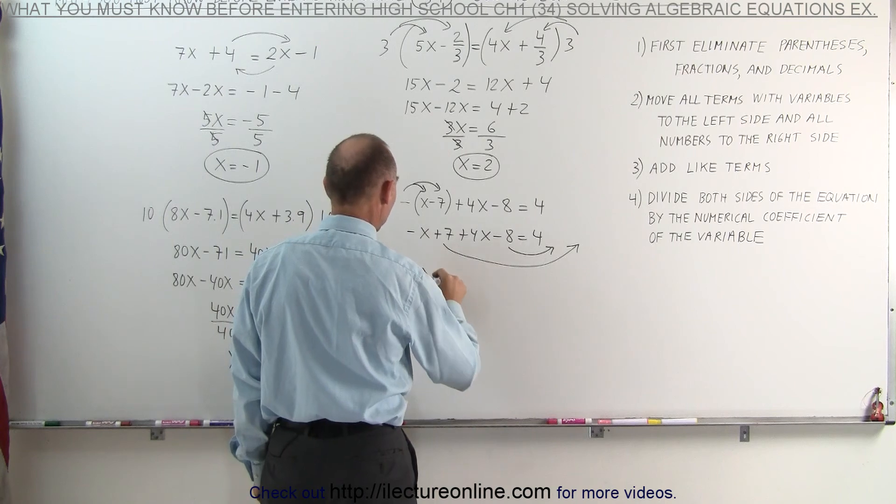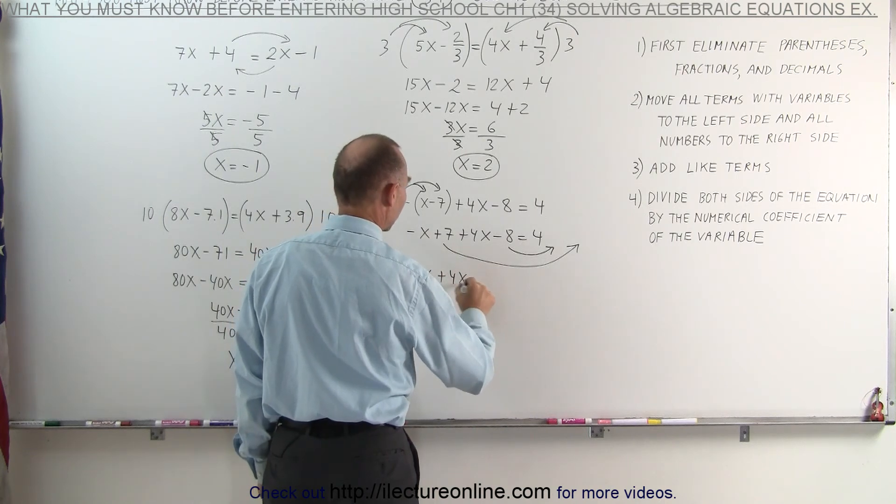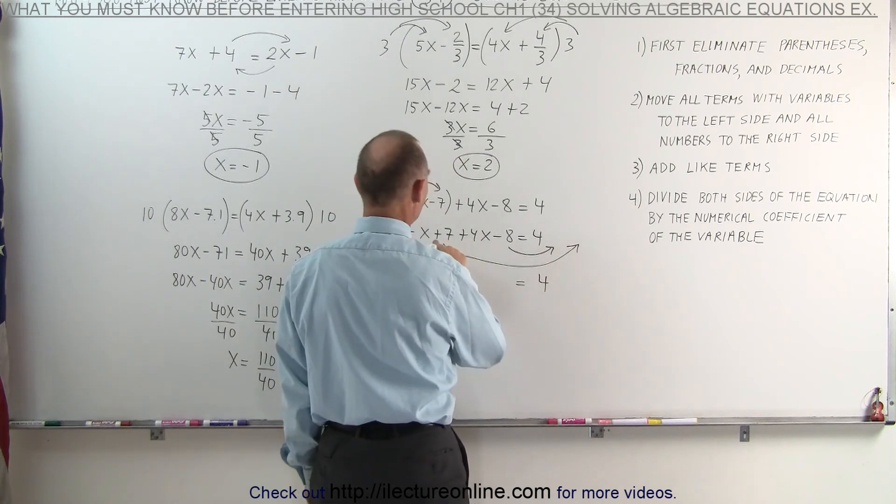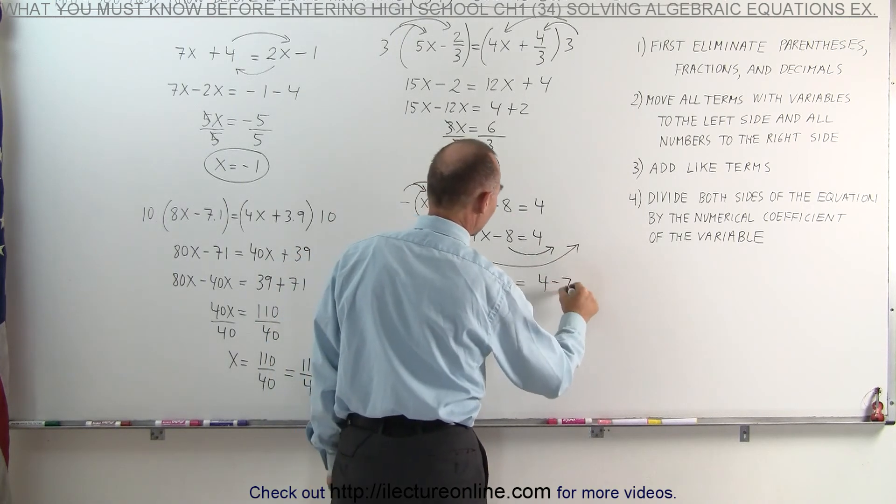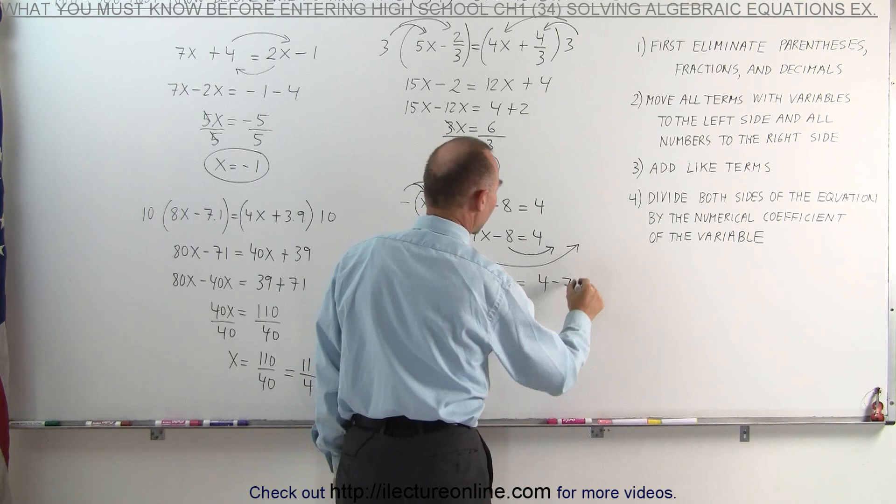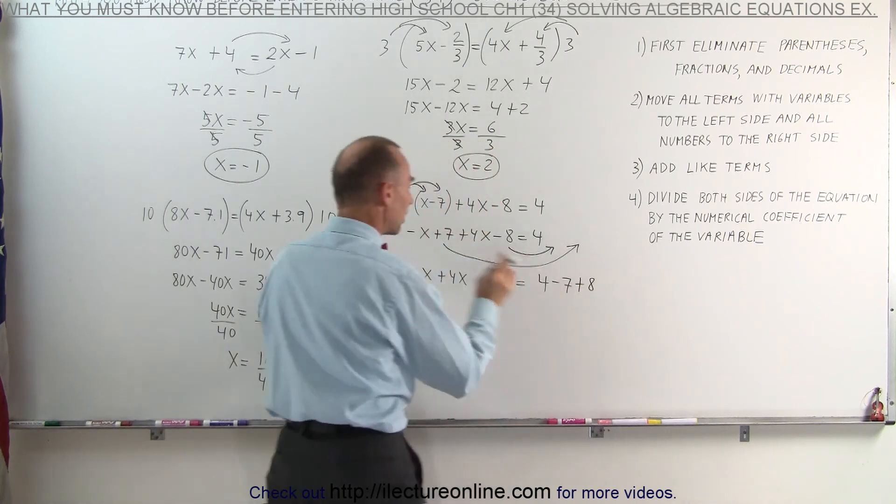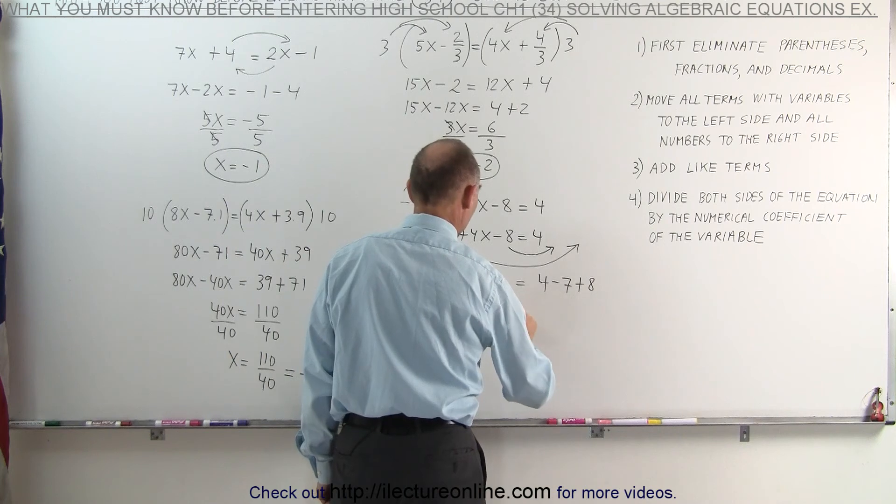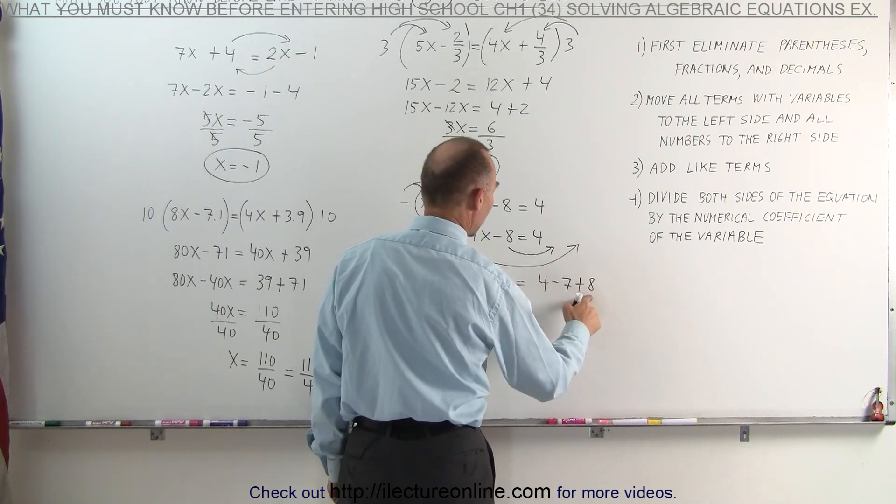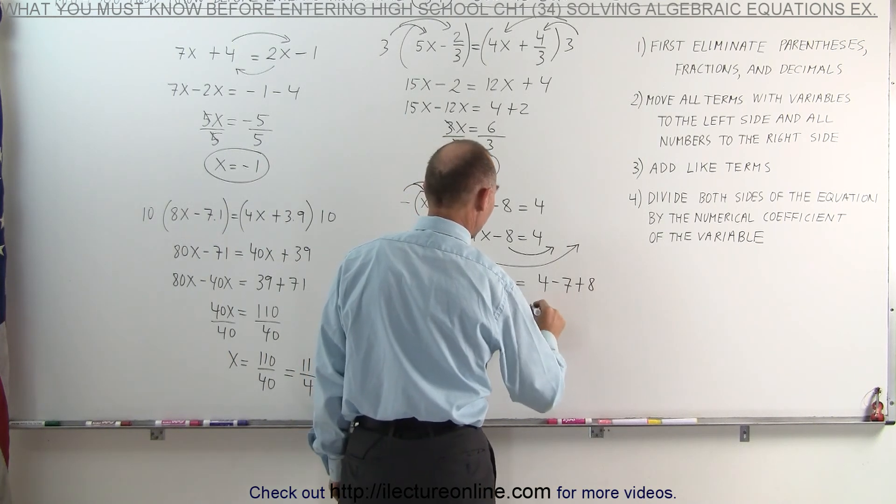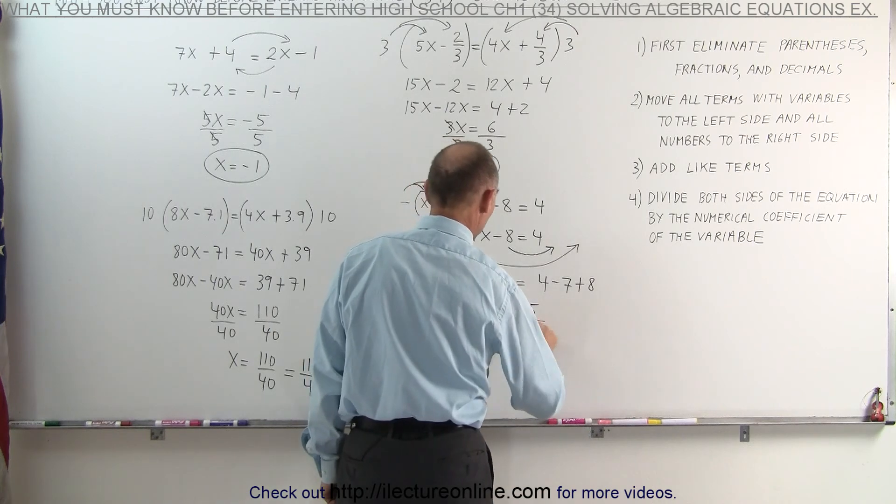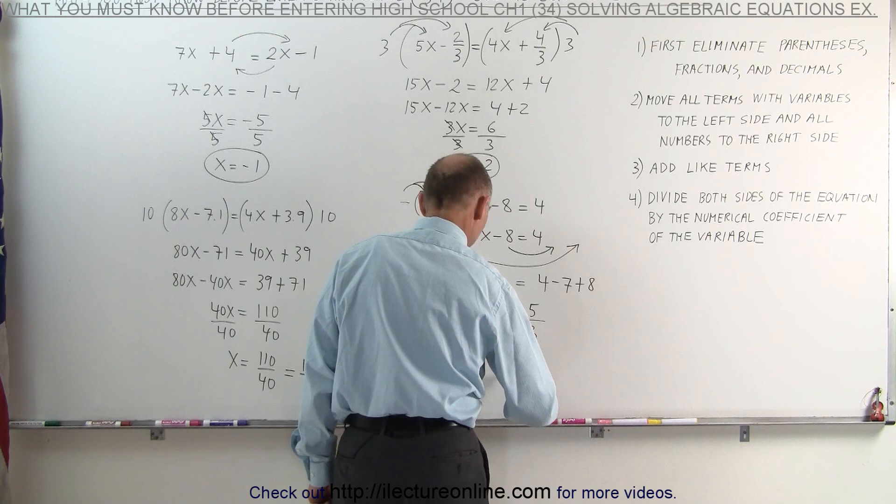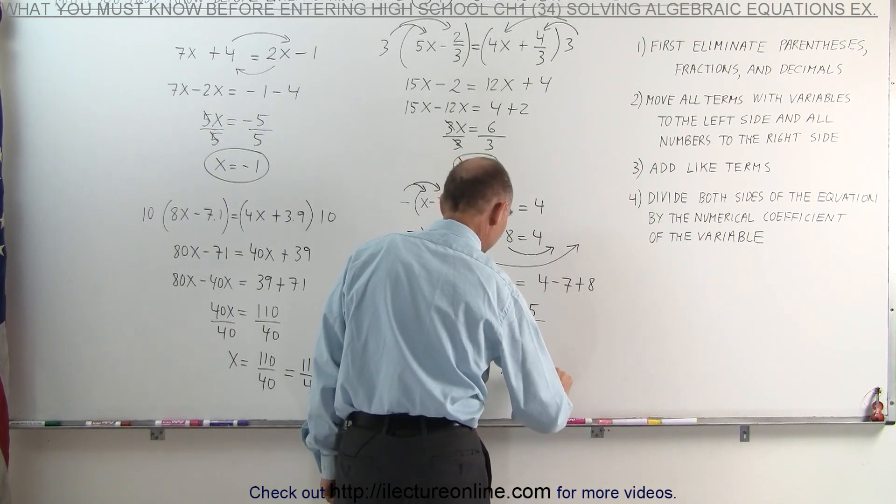On the left side, we end up with a negative x plus 4x is equal to, and on the right side, the 4 is already there, the plus 7 becomes a negative 7, and the negative 8 becomes a plus 8. Now we can combine like terms. Minus x plus 4x is 3x is equal to, that's 12 minus 7, which is 5. And finally, we divide both sides of the equation by the numerical coefficient in front of x, and x equals 5 divided by 3.